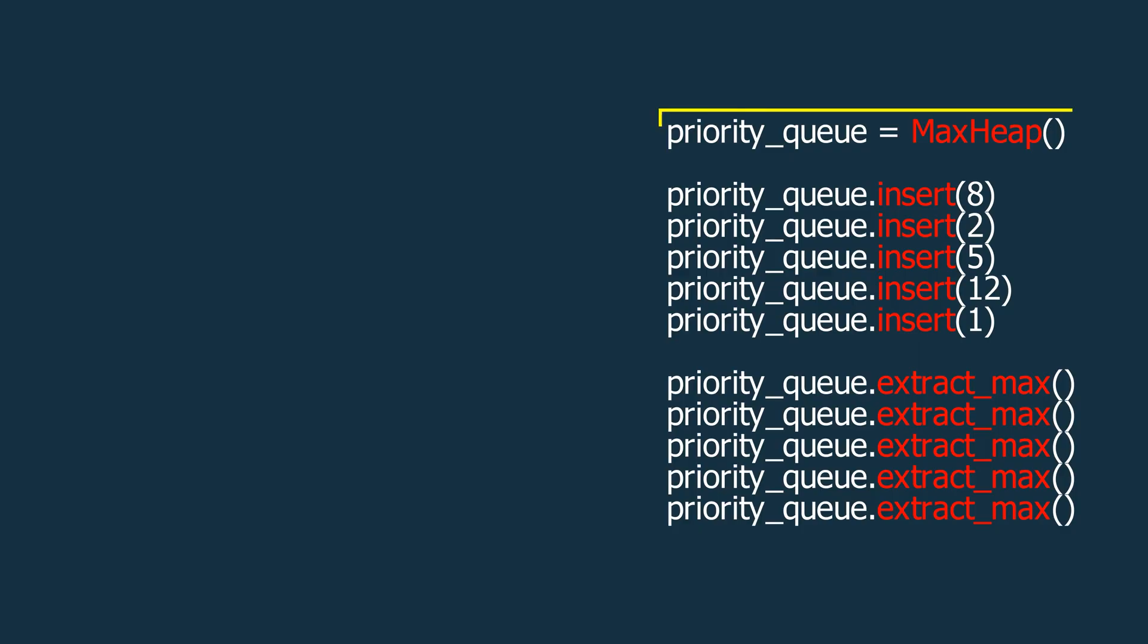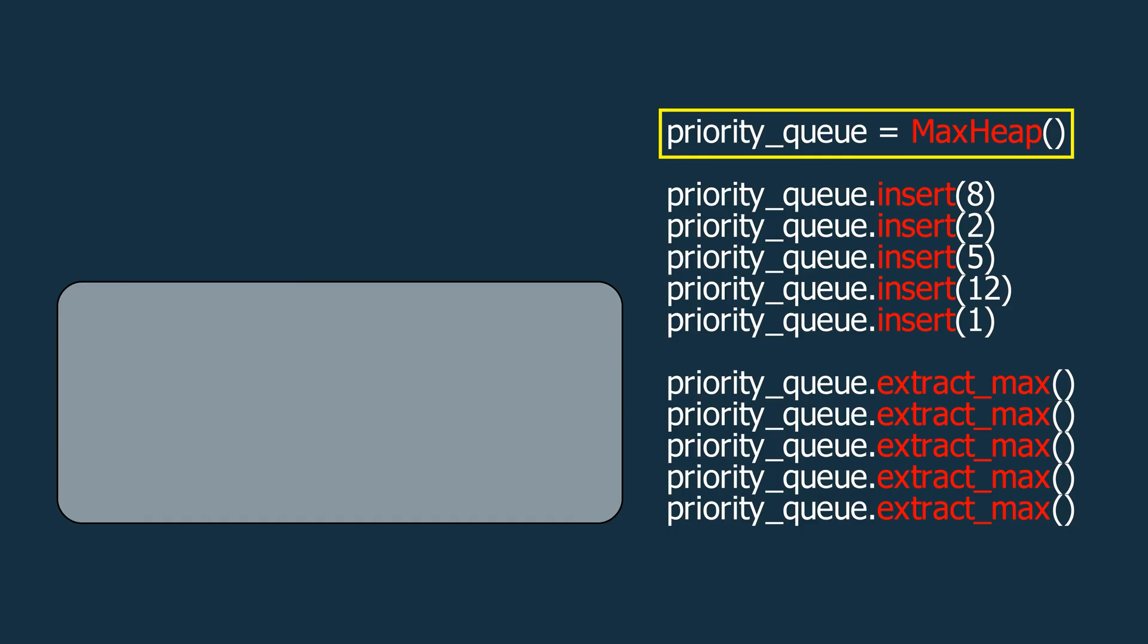First, we'll create an object using the max heap class we've already built. This heap will serve as the core structure of our priority queue. We'll insert elements along with their priorities, treating the priority as the key for organizing the heap.